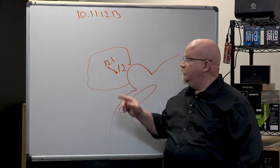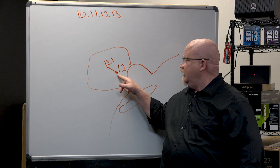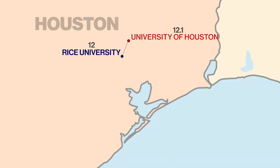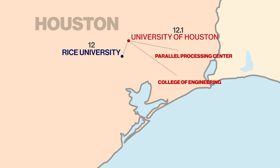Anybody who connects to the 12 router will have an IP address starting with 12. It's up to the folks at Rice University to delegate down to whoever needs it — and back then this was all free. So University of Houston becomes 12.1. They have a parallel processing center, engineering college, even an art college — and those artsy types want their own local area network. So the parallel processing center gets 12.1.44, engineering gets 12.1.27, and the art department gets 12.1.28. These are all separate local area networks.